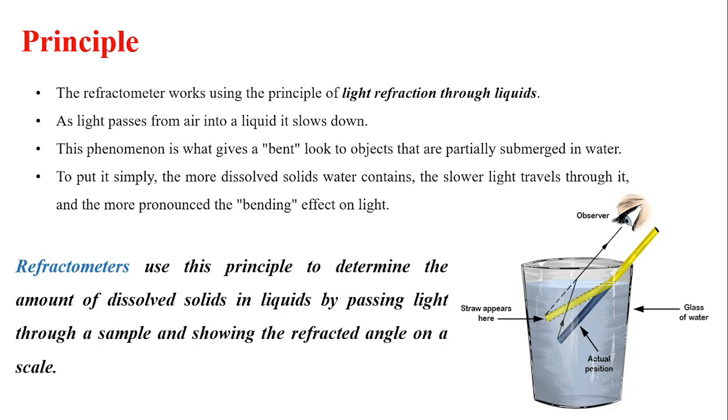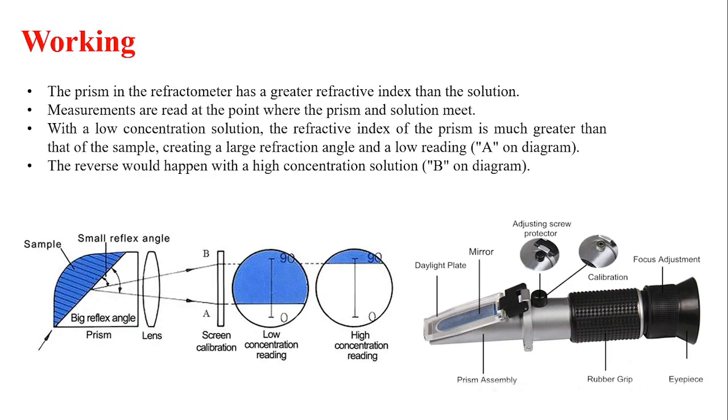This phenomenon is what gives a bent look to objects that are partially submerged in water, as you can observe in the picture shown here. The more dissolved solids water contains, the slower light travels through it and the more pronounced the bending effect on light. Refractometers use this principle to determine the amount of dissolved solids in liquids by passing light through a sample and showing the refracted angle on a scale.